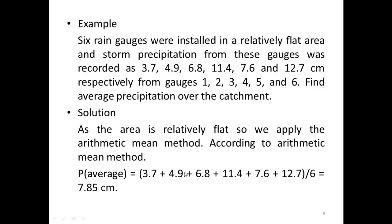According to the Arithmetic Mean Method, P_avg = (3.7 + 4.9 + 6.8 + 11.4 + 7.6 + 12.67) / 6. We add all the recorded precipitation values from the gauges and divide by the number of gauges, which is six. We get the average precipitation equal to 7.85 centimeters.